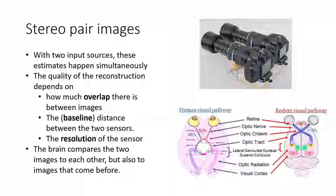The other thing that makes a big difference is the baseline — the distance between the two sensors. The wider that distance is, the better your judgment, because that's what creates the parallax or difference between images that lets you make those judgments. If the eyes were perfectly overlapping in exactly the same position you'd get no extra information. And the last thing is the resolution of the sensor: as the number of megapixels in your image gets better, your 3D reconstruction is going to be better.